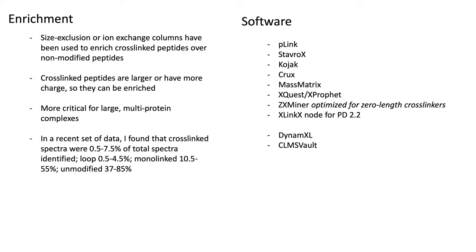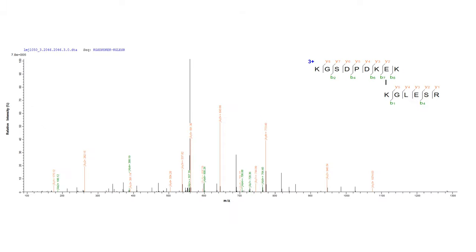There are also multiple different software packages that have been used to help identify and provide information about crosslinked peptides, and some of these are commercially available and do a very nice job of analyzing crosslinked data. Part of the reason it's important to have nice crosslinked data and software is because the spectra, unless you're using a mass spec cleavable crosslinker, tend to be very complicated. What you see are the combination fragmentation spectra for two peptides that are crosslinked together — fragment ions coming from both parts of the crosslink — which provides us with the sequence information to know which two peptides are being crosslinked together and where the crosslinking occurs.